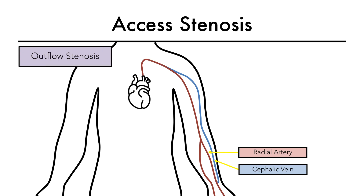Next, let's look at this radiocephalic fistula to understand axis venous outflow stenosis. Venous outflow stenosis causes interruption of blood flow downstream from the venous segment of the fistula up into the central veins.